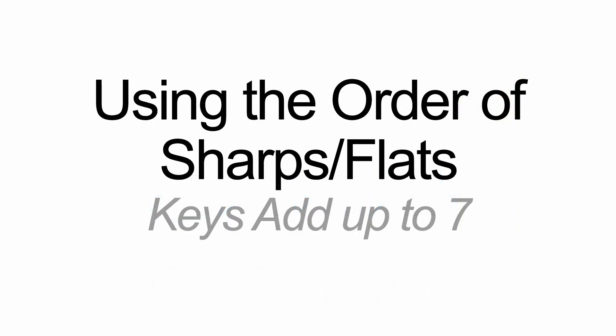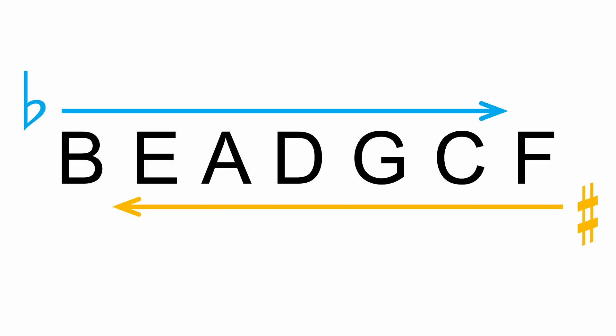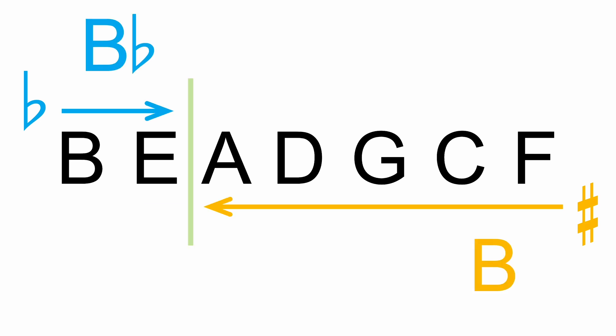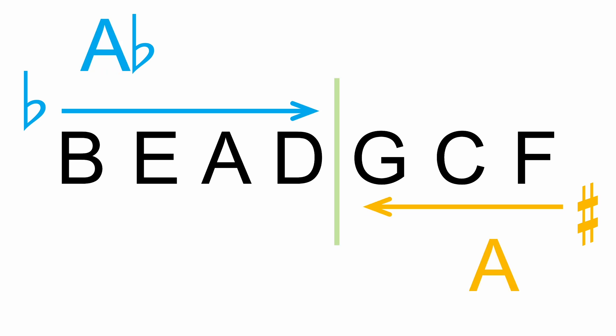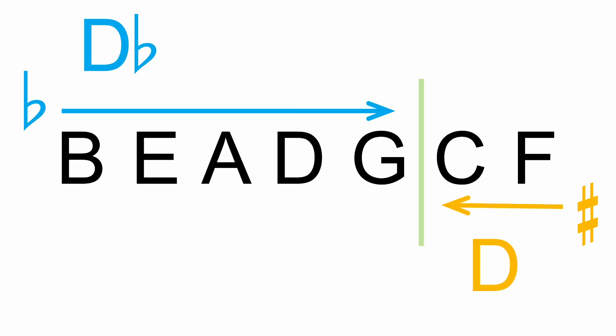Adding up the sharps and flats: all of the keys will add up to seven. The order of flats goes left to right, and the order of sharps goes right to left in the opposite direction. I like the order of flats because it spells out the word BEAD, then GCF. B flat has two flats versus the five sharps left over — two plus five adds up to seven. Three flats plus four sharps gives seven; four flats plus three sharps gives seven. It keeps going down the line.